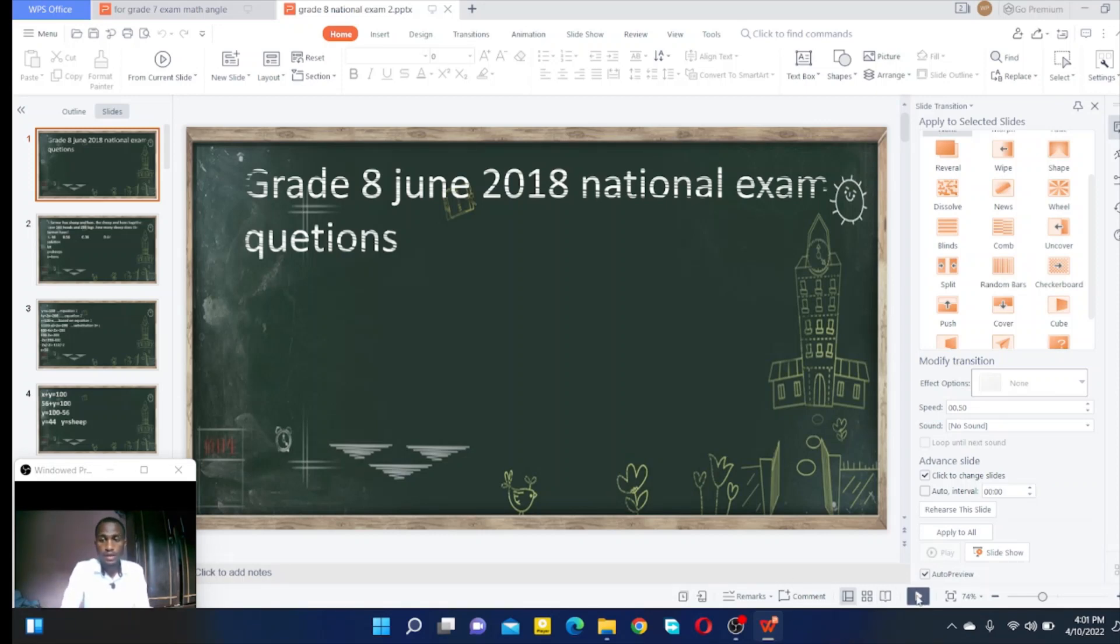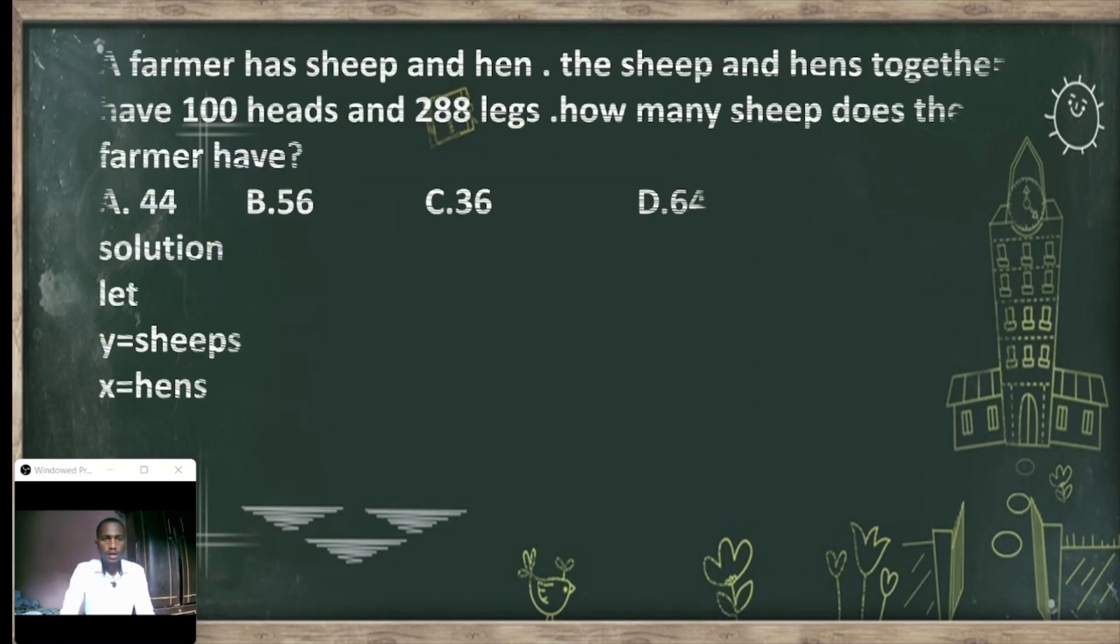The question is: A farmer has sheep and hen. The sheep and hen together have 100 heads and 288 legs. How many sheep does the farmer have? A is 44, B is 56, C is 36, and D is 64. So let's do it together.